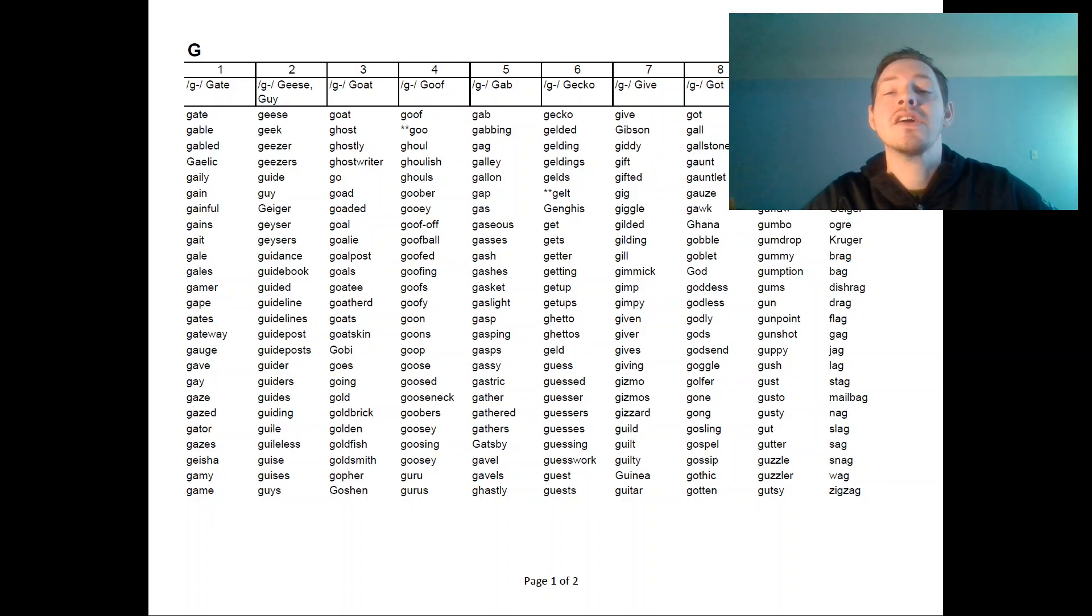Like the K, you're going to lift the back of the tongue up and stop that airflow coming out the mouth or the nose just for a little bit and then let it pop out, explode. The trick between the K and the G is the voice.